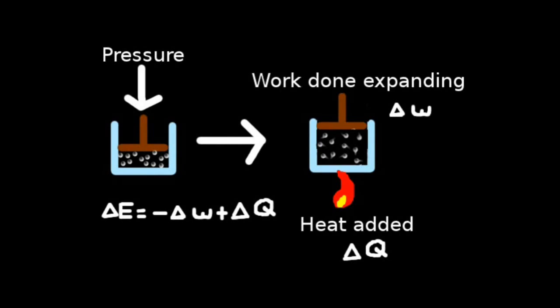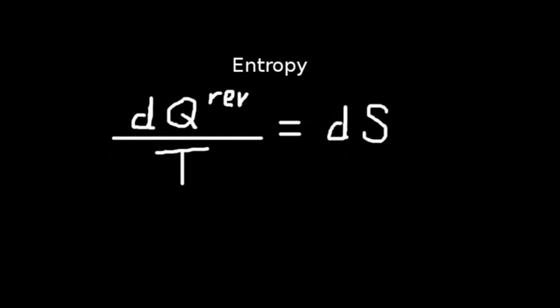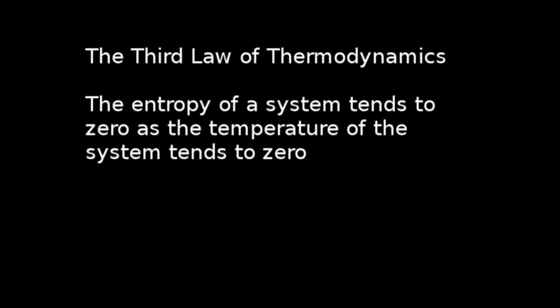As a quick summary, we have the three laws of thermodynamics. The change in internal energy is the heat added to the system take the work done by the system. The entropy of an isolated system never decreases. And finally, that the temperature of a system goes to zero as entropy also goes to zero.